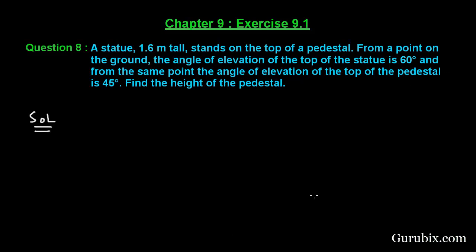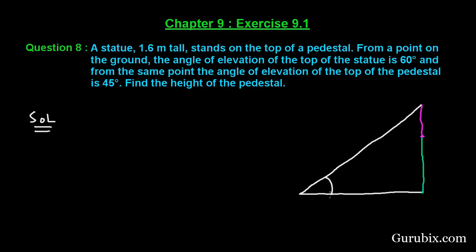First of all, let us draw a rough sketch of the figure. Suppose this is the ground, and here we have a pedestal. On this pedestal we have a statue. From this point on the ground, if we find the angle of elevation of the top of the statue, this angle of elevation is 60 degrees, and from the same point the angle of elevation of the top of the pedestal is 45 degrees.